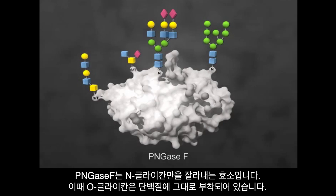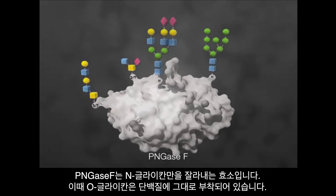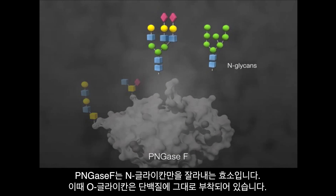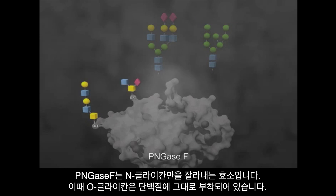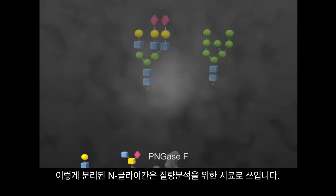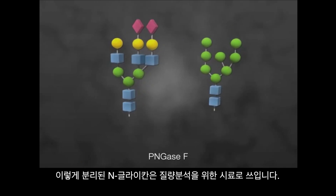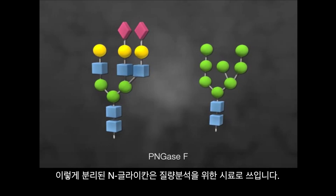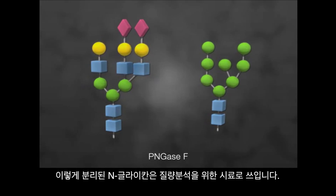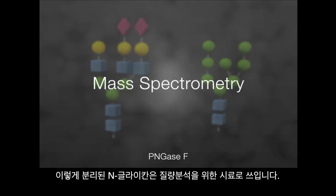PNGase-F is able to remove most N-glycans as an intact glycan molecule. If present, the O-glycans remain attached to the protein. The released glycans are intact and are ready for further characterization using analytical methods, such as mass spectrometry.